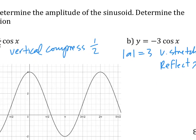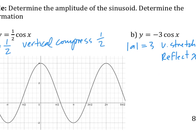Let's look at C. Amplitude is pretty easy to figure out. The graph goes from 4 to negative 2, so the total height is 6 — divide by 2, so the amplitude is 3. It's half of the total height.